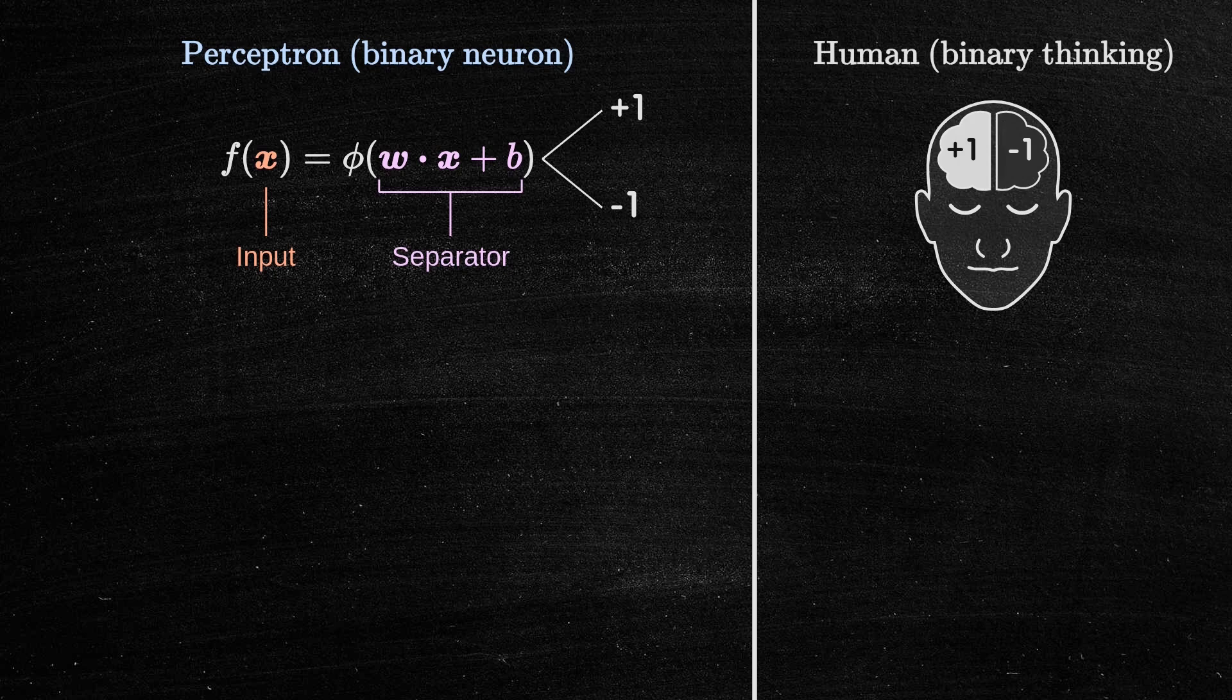Mathematically, this separator is represented in the perceptron as a hyperplane. A hyperplane is like a multidimensional wall separating one side from another.